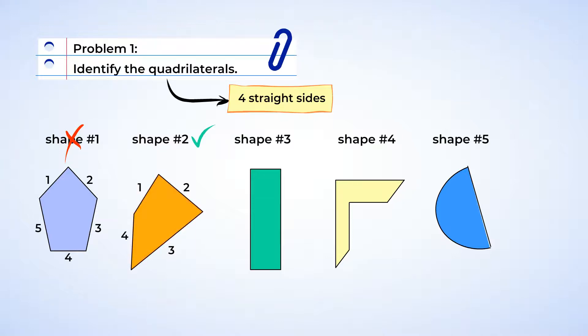Moving on to shape three, this looks like a rectangle. Aha! We just learned that a rectangle is a quadrilateral. But let's count the sides to be sure. Yup, four sides. Shape three is also a quadrilateral.